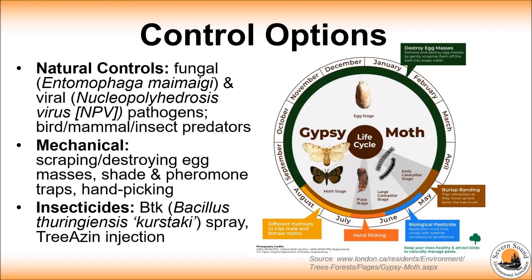It is up to landowners to decide whether or not to have insecticides applied on their properties. Two of the ones used for gypsy moth are tree injections for individual trees, which provides protection for one season and is usually used on high risk trees. The other is a BTK spray for ground-based or aerial applications to leaves of affected trees.